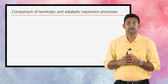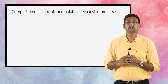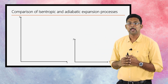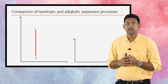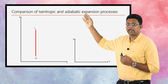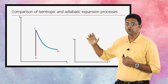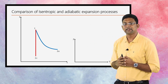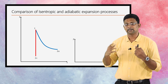Next, let us compare the isentropic and adiabatic processes for an expansion process. We are showing these processes on h-s and p-v diagrams. The red one represents the isentropic process — a straight vertical line meaning entropy is constant — with starting state 1 and end state 2s, where 's' stands for isentropic. The blue one represents the adiabatic process, also starting at state 1 and ending at state 2a, where 'a' represents the adiabatic process.